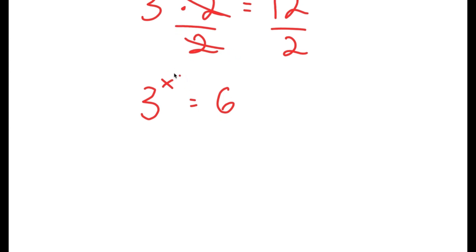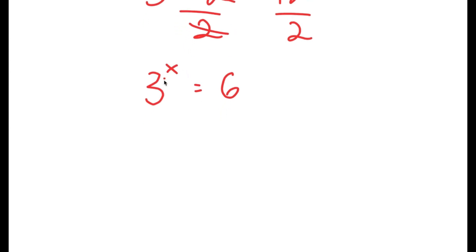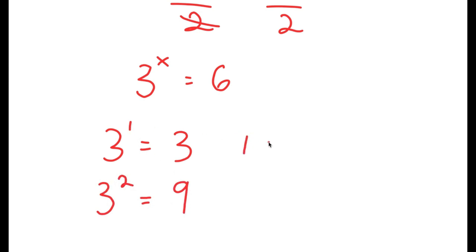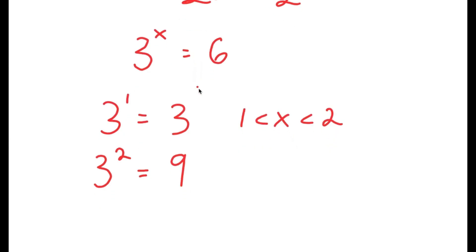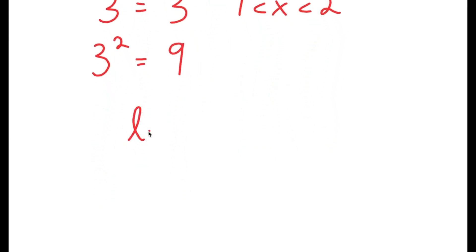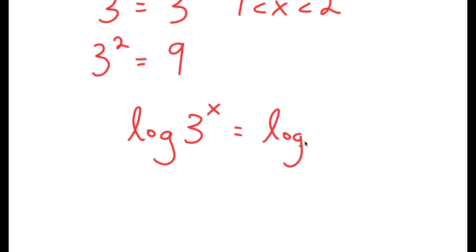To solve this, we know that x is going to be a decimal because 3 to the power of 1 is 3 and 3 to the power of 2 is 9. So x is going to be somewhere in between 1 and 2. We want to find the exact value of x, so I'm going to start by taking the log on both sides. I get log of 3 to the power of x is equal to log 6.